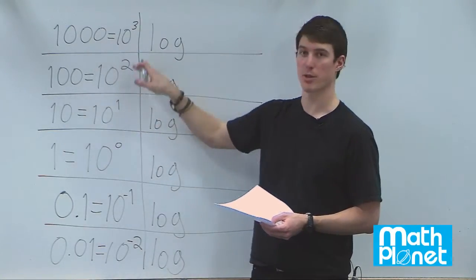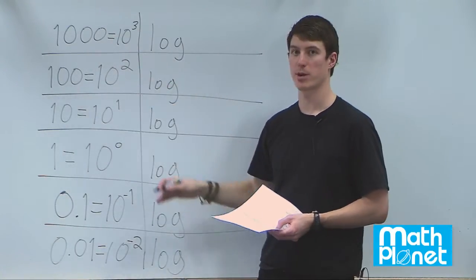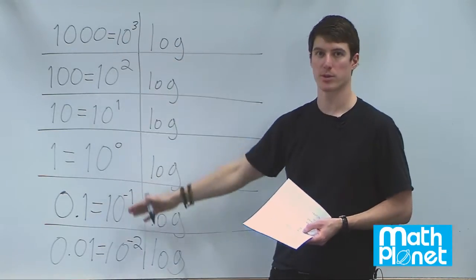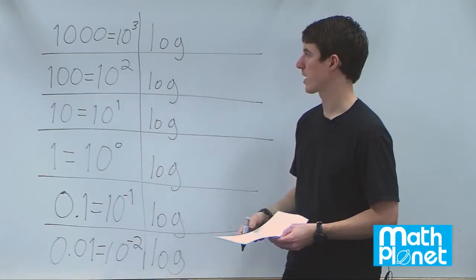So we have a thousand is equal to 10 to the 3, a hundred is equal to 10 to the power of 2 or 10 squared, etc. And this is the standard way to write powers, perhaps if you're going to write something in scientific notation.